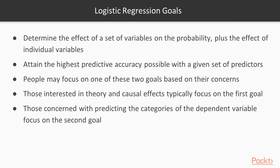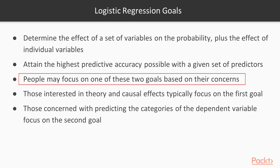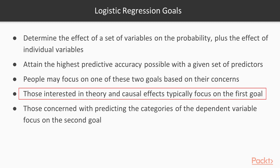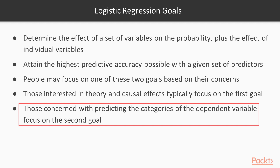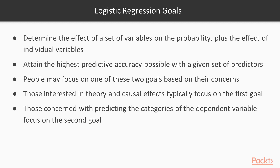Not only do we want a statistically significant model and not only do we want to determine which predictors are the important ones, but we also want a model that gives us a high degree of accuracy in predicting our categorical outcomes. People may focus on one or the other of these goals based on their purpose. Those more interested in theory and causal effects will typically focus on the first goal — are the predictors statistically significant and which ones are important? Those more interested in predicting the categories of the dependent variable will focus on the second goal: how good is the model at predicting the outcome?